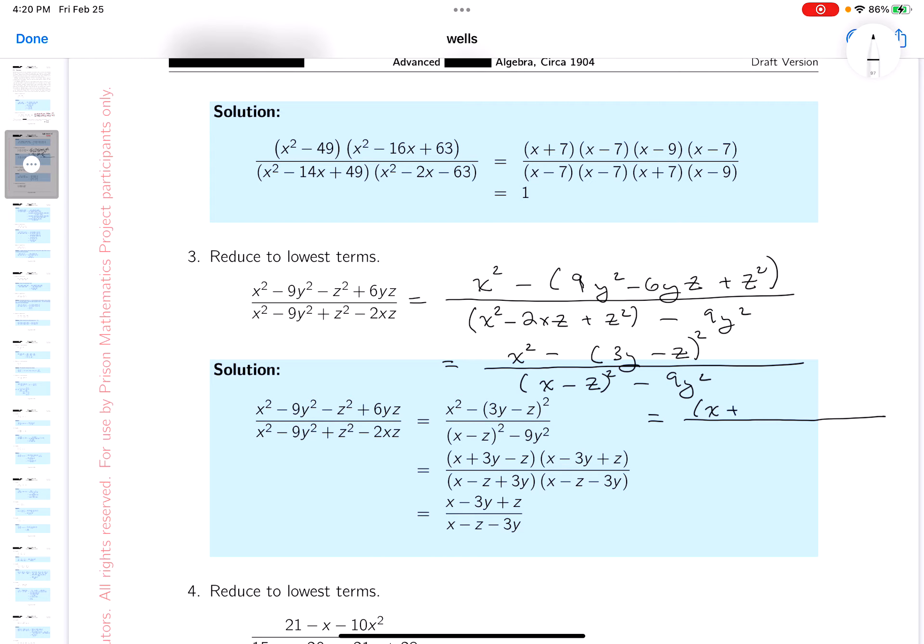It's going to be x plus 3y minus z, and it's going to be x minus 3y minus and minus z, which is plus z.